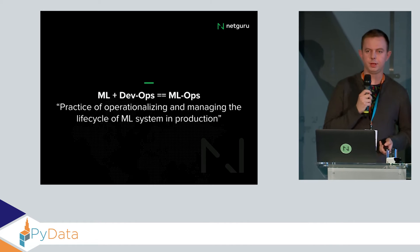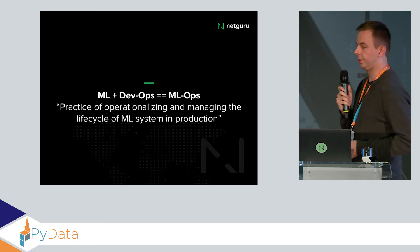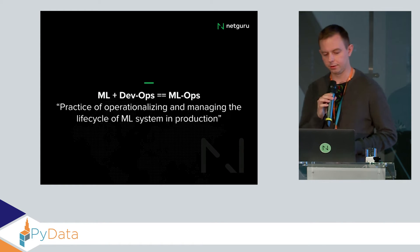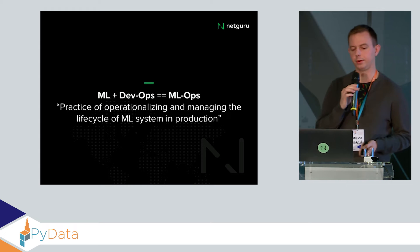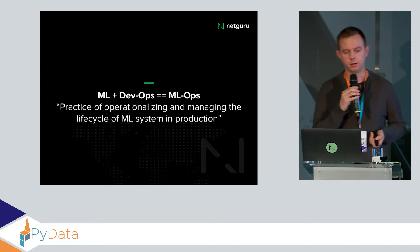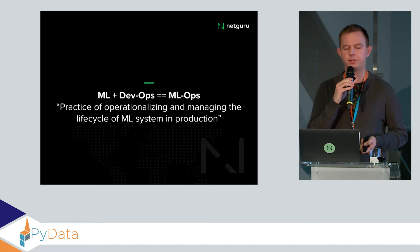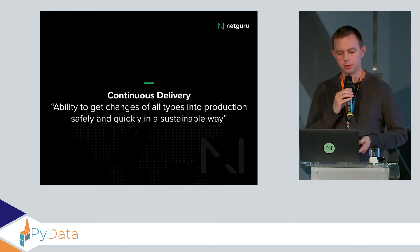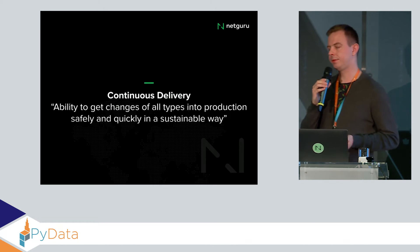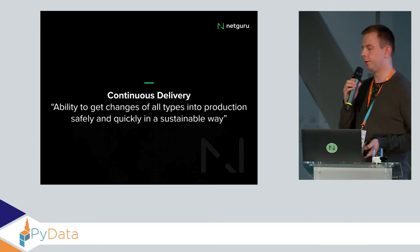The combination of machine learning and DevOps is called MLOps — the practice of operationalizing and managing the life cycle of an ML system in production. The DevOps movement started, I think, in 2009, when Jess Humbold coined the term 'continuous delivery': the ability to get changes of all types into production safely, quickly, and in a sustainable way. What kinds of changes do we have in machine learning? Code is one — the same as in standard software engineering, changed according to business requirements or to fix bugs.